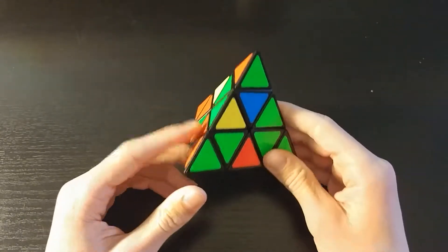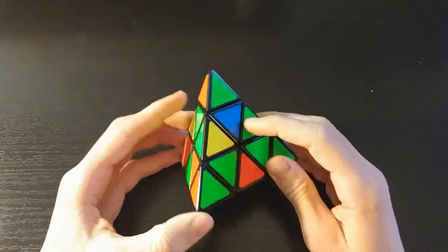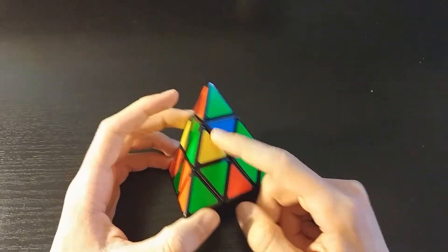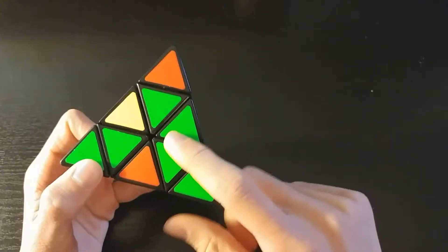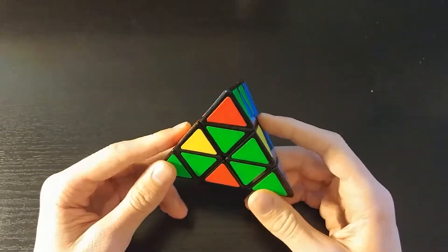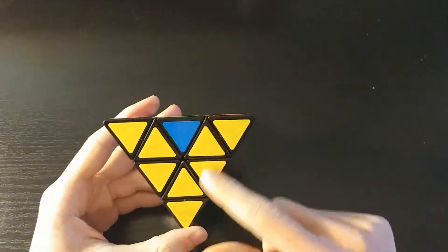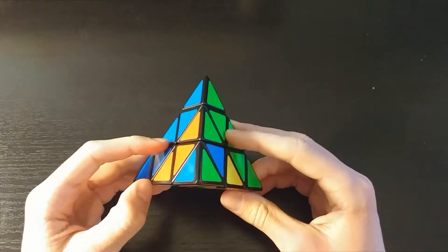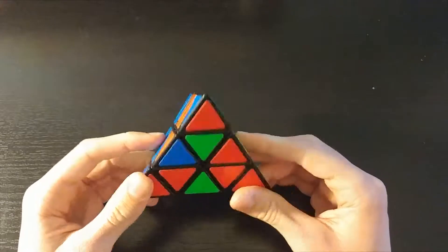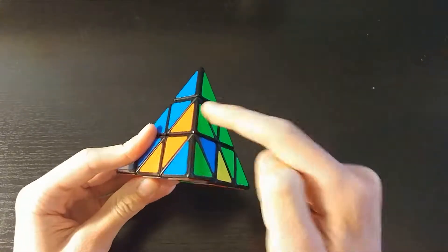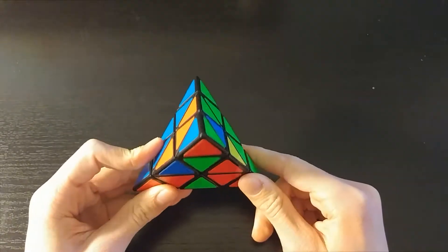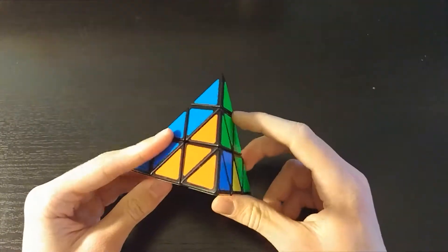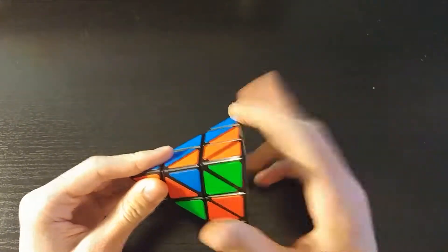You can see that we're done solving the V. You basically have the first layer except for one edge. This is kind of how the advancement of that L4E can tie in with this, because we have one, two, three, four edges left to do. Now is just a convenient time for me to solve this tip, just one move away.